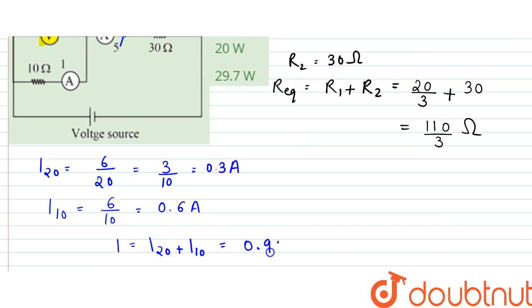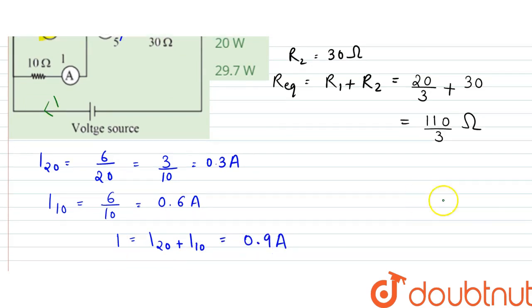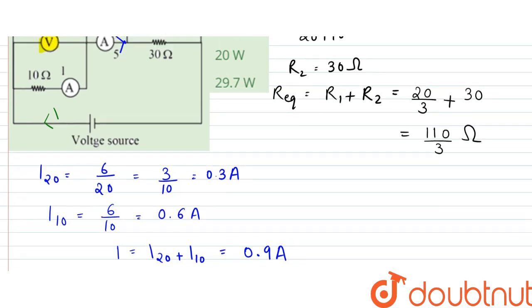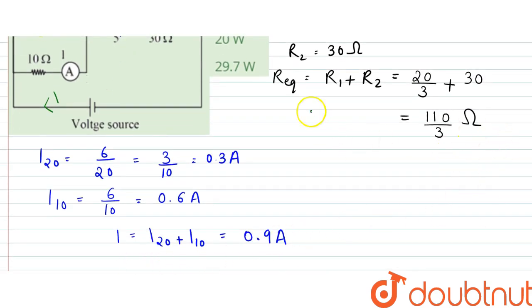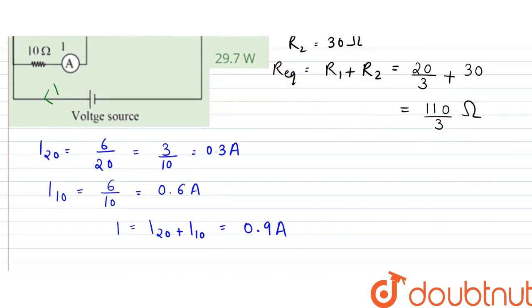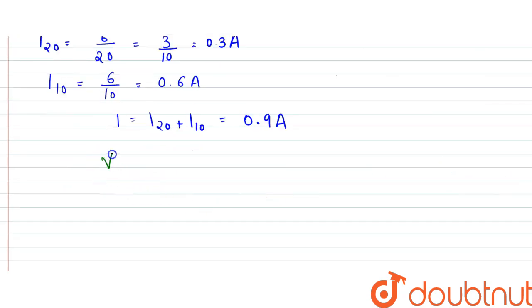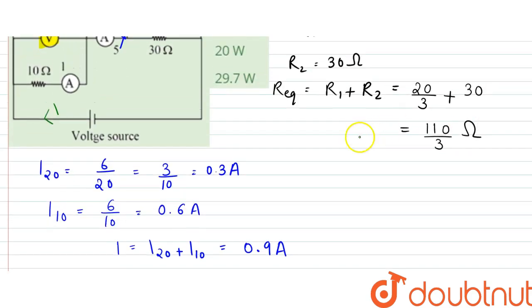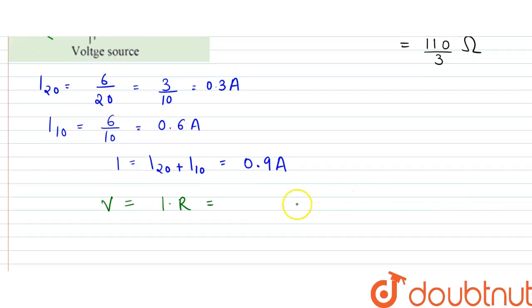So this is the total current and this is the resistance, so we can find out the voltage. According to Ohm's law, V would be equal to I into R, which is equal to 110 by 3 into 0.9. That's 110 by 3 into 9 by 10, so this would be 33 volts.